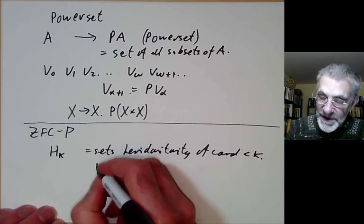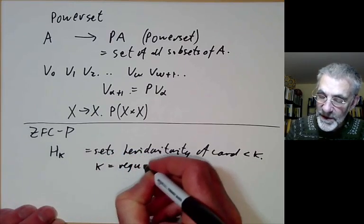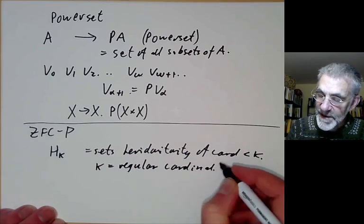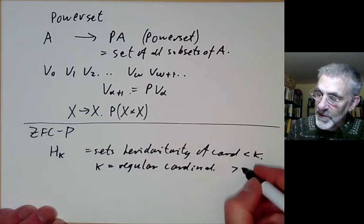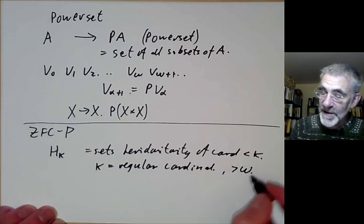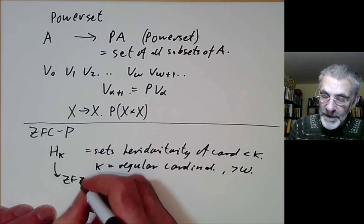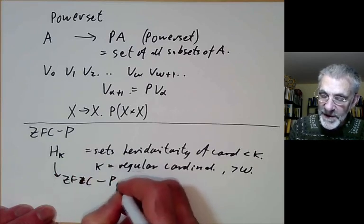And if you take kappa to be some sort of a regular cardinal, for instance any successor cardinal, and you want to be greater than omega so that the axiom of infinity is satisfied, then this will be a model of ZFC without the power set axiom.